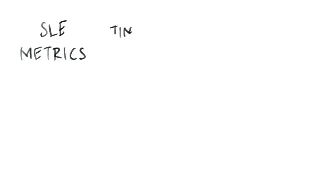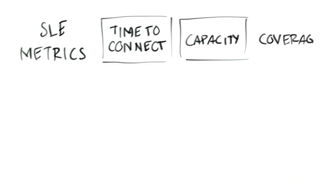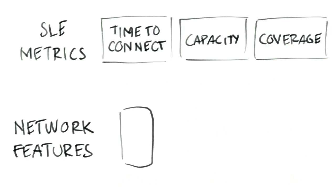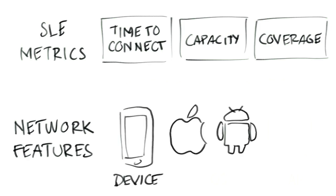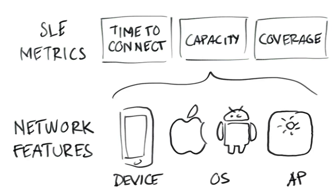Today we're talking about how the Juniper MIST AI-driven platform uses mutual information to help you understand which network features — such as mobile device type, client OS, or access point — have the most information for predicting failure or success in your SLE client metrics.